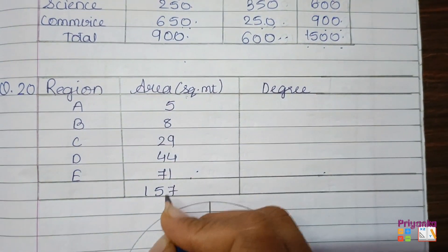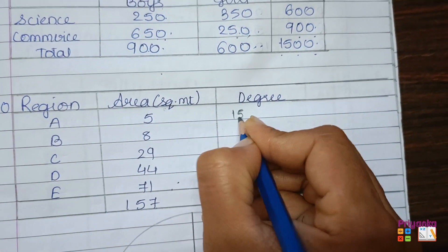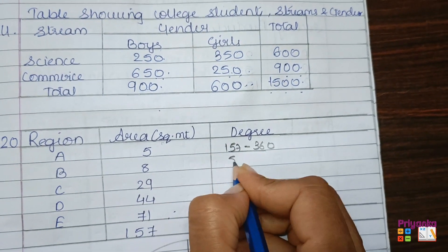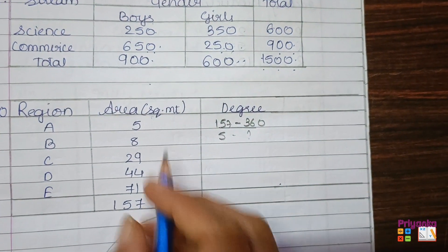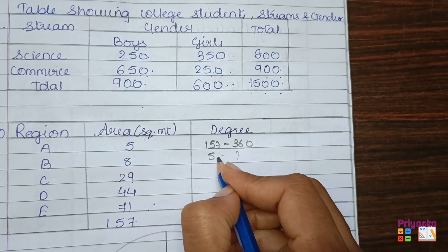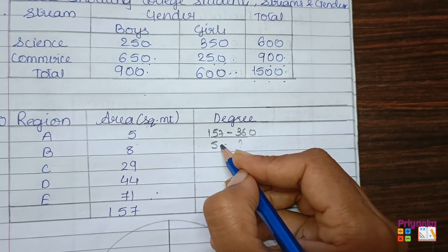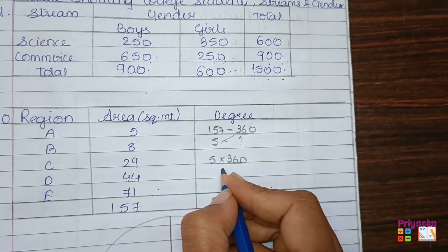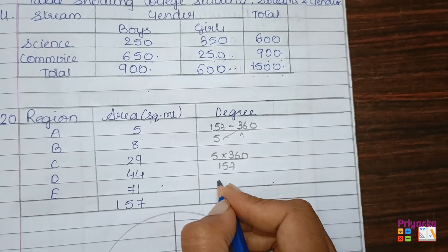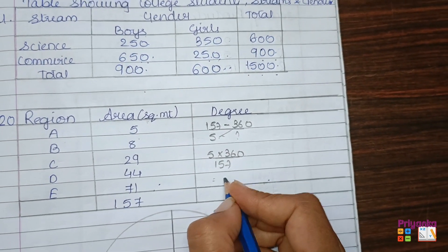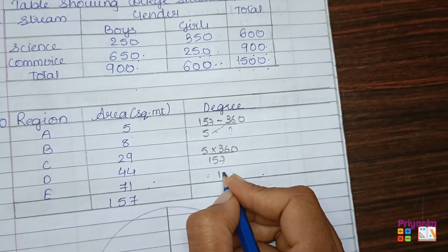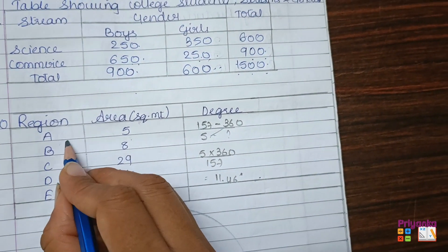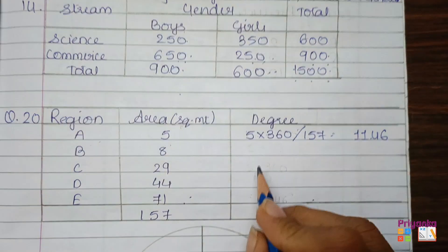The total area is 157. For the total, 157 corresponds to 360 degrees. For region A with area 5, use cross multiplication: 5 multiplied by 360 divided by 157 gives approximately 11.46 degrees. This is the degree for region A.